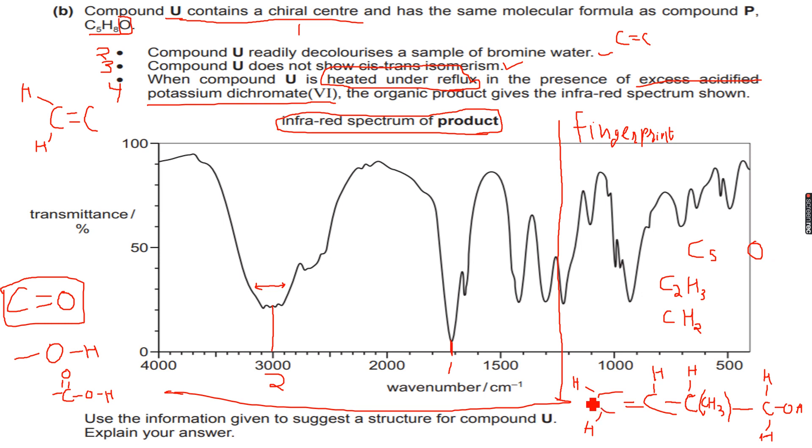But let's count the number of hydrogen atoms. 1, 2, 3, 4, 4 plus 3 is 7, 7 plus 1 is 8, then 9 and then 10. So this becomes C5H10O. However, we need C5H8O. So this cannot be a primary alcohol. So we have deduced that it is not a primary alcohol.